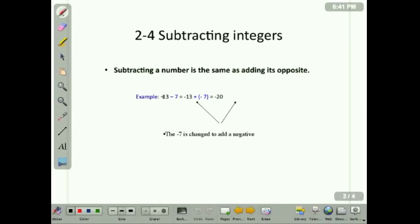If we have a problem negative 13 minus 7, we can use the additive inverse to say negative 13 plus a negative 7, which becomes a negative 20.